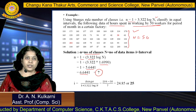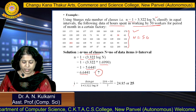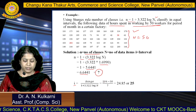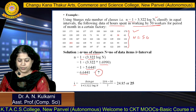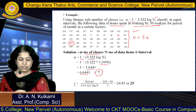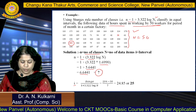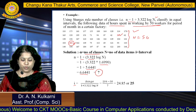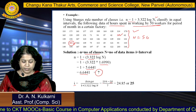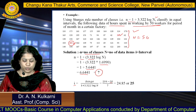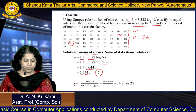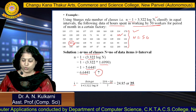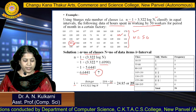Now calculate the interval for these 7 classes. The interval equals range divided by the number of classes. From the data, the minimum value is 30 and the maximum value is 204. So range = 204 − 30 = 174, divided by 7 = 24.85, rounded to 25. So the class width is 25.